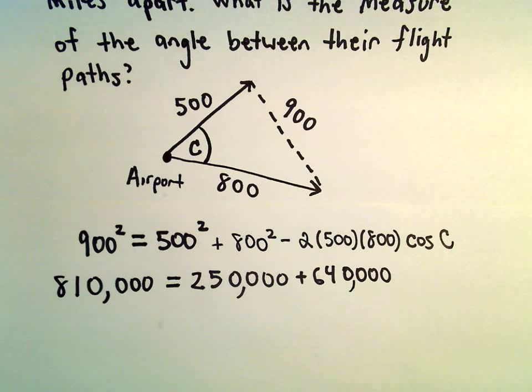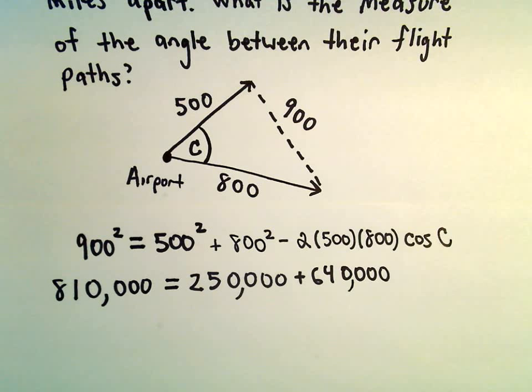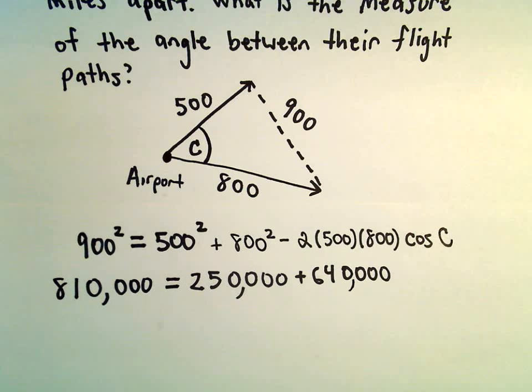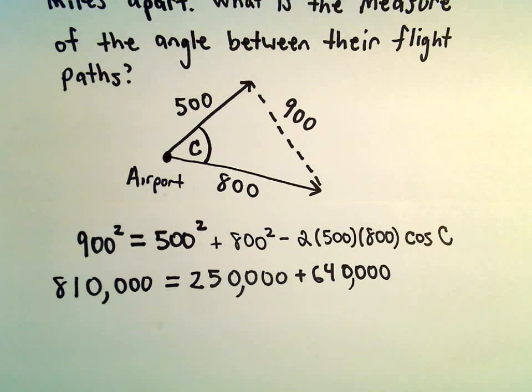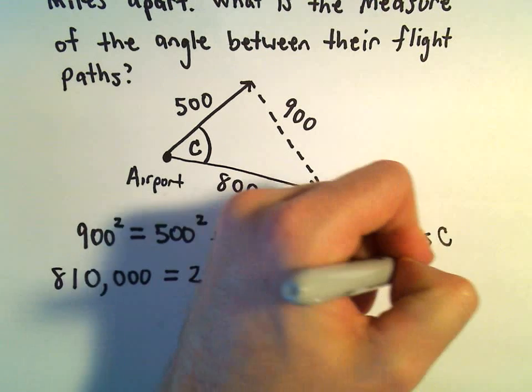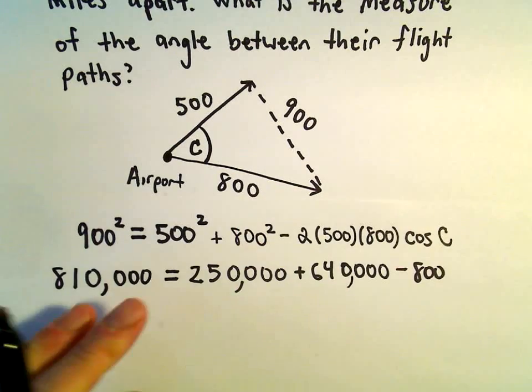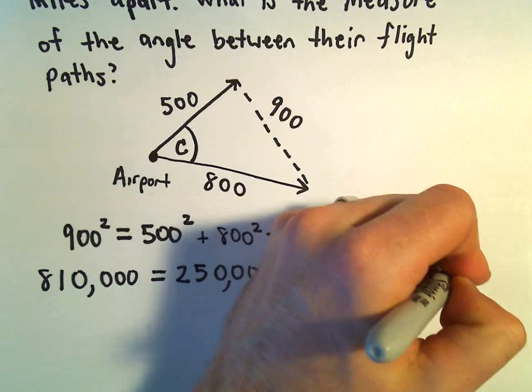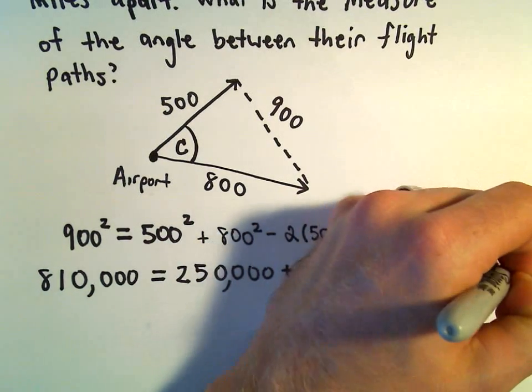Let's see, let's do the other part here. So 2 times 500, that's just going to give us 1,000. If we multiply that by 800, that's going to give us just 800,000. So minus 800,000 times cosine of C.